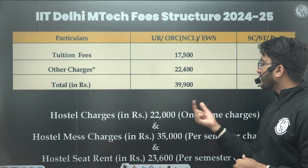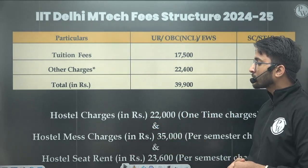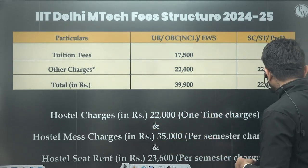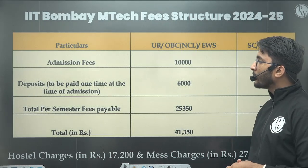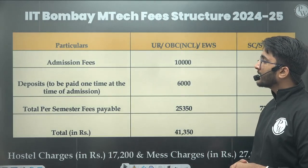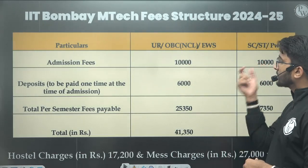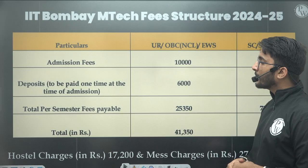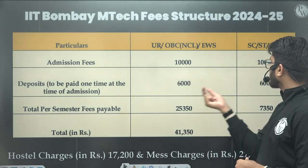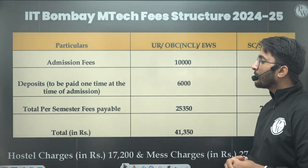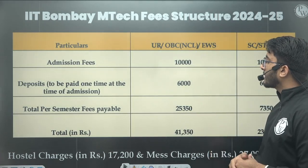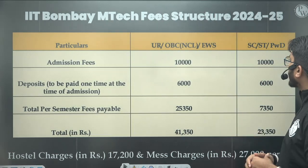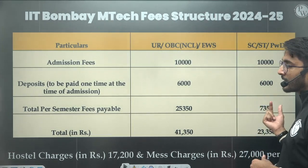The hostel charges at IIT Delhi vary depending on which hostel you choose — the seat rent and other charges you also need to pay. For IIT Bombay, the admission fees is ₹10,000, which is the same for General, OBC-NCL, SC, ST, and PWD. The one-time deposit at admission is ₹6,000 for both categories, and the total per semester fees is ₹25,350 for General, OBC-NCL, and EWS, and ₹7,350 for SC, ST, and PWD.